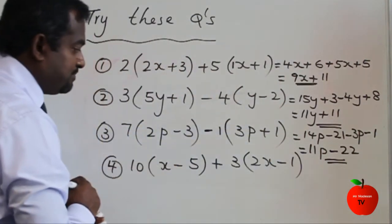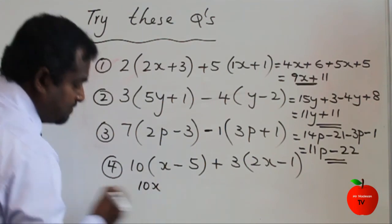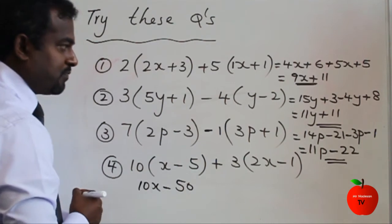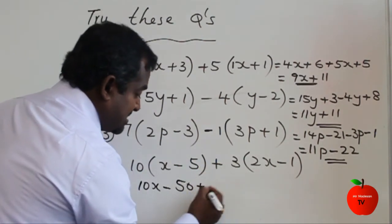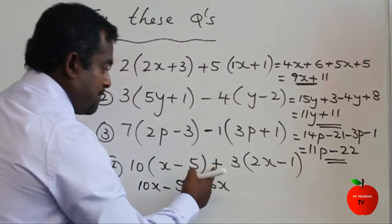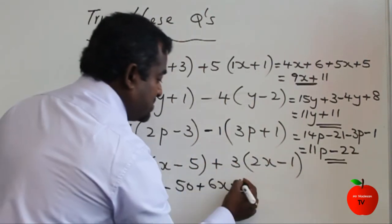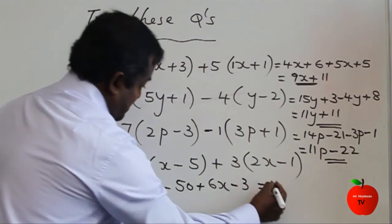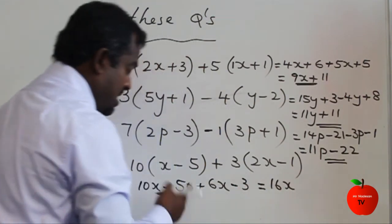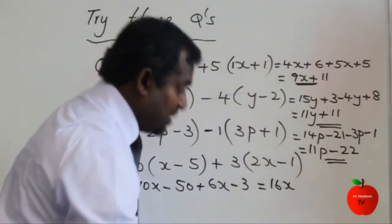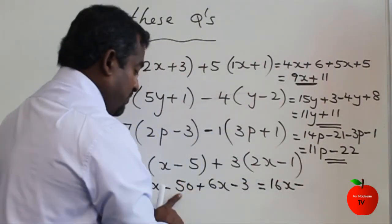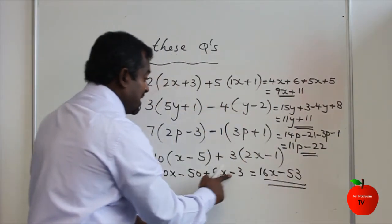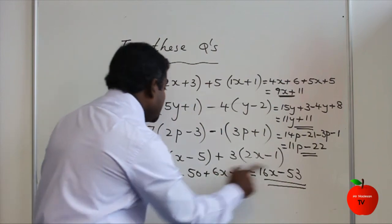The last one: 10 times 10x, then minus 10 times 5 is 50. Plus 3 times 2x is 6x. Plus times minus is minus: 1 times 3 is 3. When you simplify: 10x plus 6x is automatically 16x. Minus 50, down 50. Minus 3, down again — altogether down 53. So minus 53. Don't think minus into minus and put a plus here — when simplifying, think number line: minus 50 and minus 3, both going down.